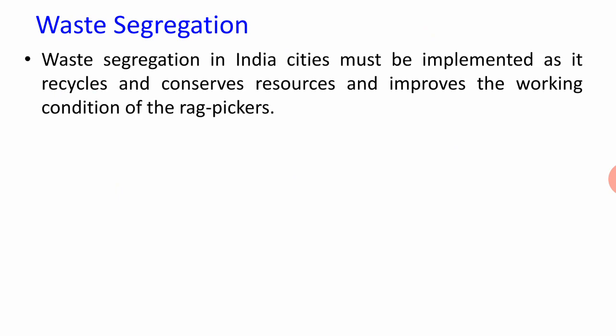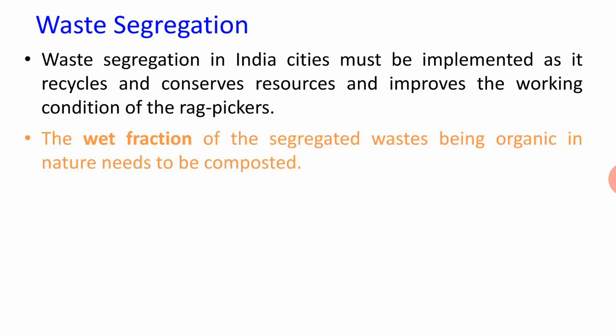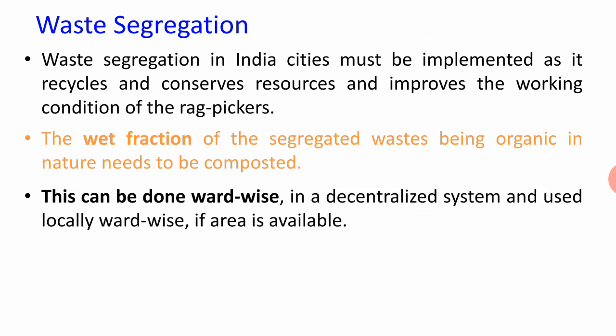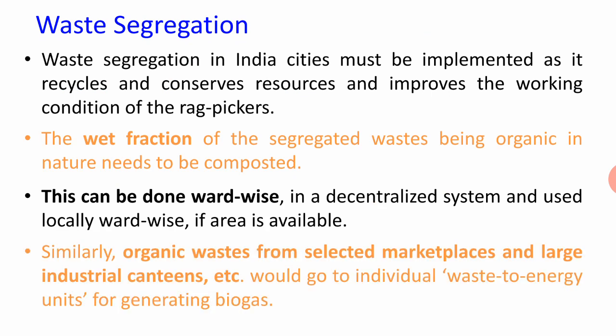Waste segregation requires a separate mechanism. Waste materials need to be separated into biodegradable, non-decomposable, recyclable, and non-recyclable fractions, which are then sent to different processing streams. The wet fraction of segregated waste, being organic in nature, needs to be composted, and this can be done ward-wise. Organic waste from selected marketplaces and large industrial units would go to individual waste-to-energy units for generating biogas.